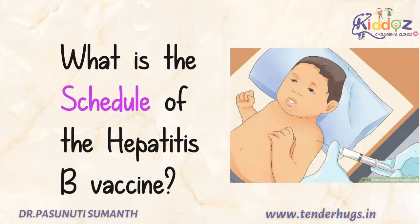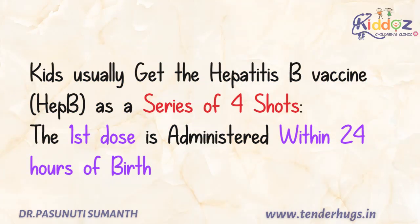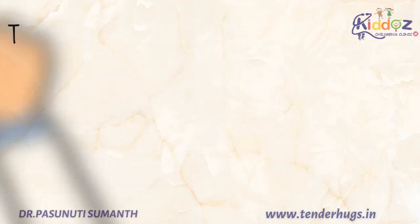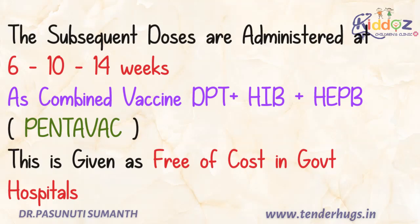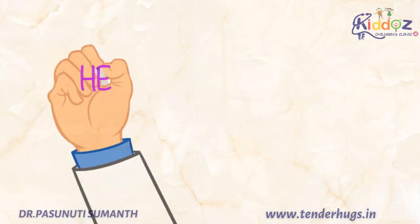The Hepatitis B vaccine is given as a series of 4 doses. The first dose is administered within 24 hours of birth. The next doses are administered at 6 weeks, 10 weeks, and 14 weeks. These subsequent doses are given as part of a combined vaccine called PentaVac, which is given free of cost in government hospitals. There is no need for booster doses, as the initial 3 to 4 doses provide almost lifelong protection.